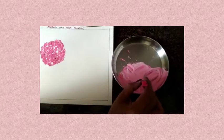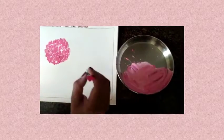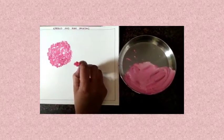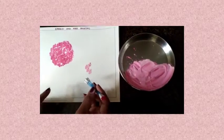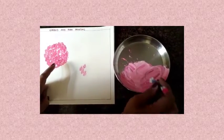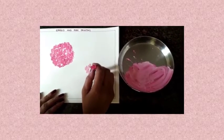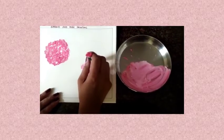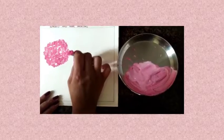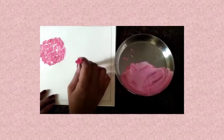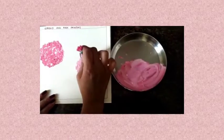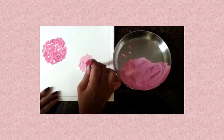So dip and press, press. Can you see children? There is a difference in the color. This is a dark pink color. And what we are making now is a light pink flower. So all you have to do is press and lift the earbud. You will get the impression of the earbud.